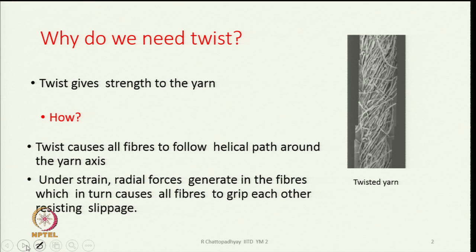A twisted structure is shown on the right-hand side. We can see the way the fibres appear on the surface of the yarn. The helical nature of the fibres on the surface of the yarn is quite visible here.